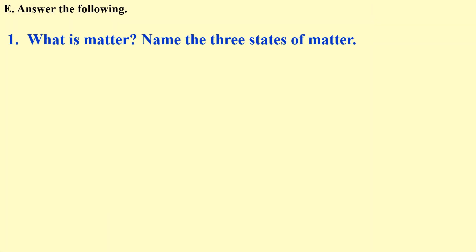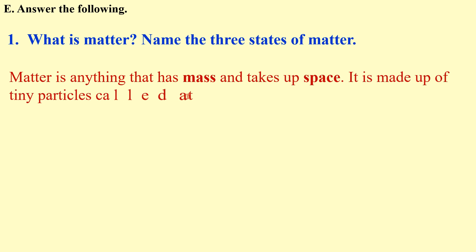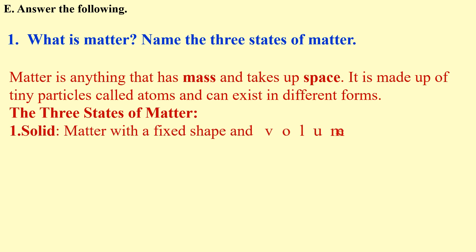Answer the following: What is matter? Name the three states of matter. Matter is anything that has mass and takes up space. It is made up of tiny particles called atoms and can exist in different forms. The three states of matter: Solid - Matter with a fixed shape and volume. Example: Rock, Wood.